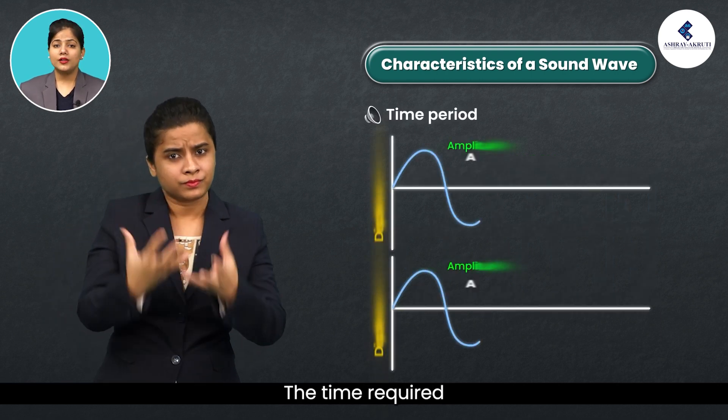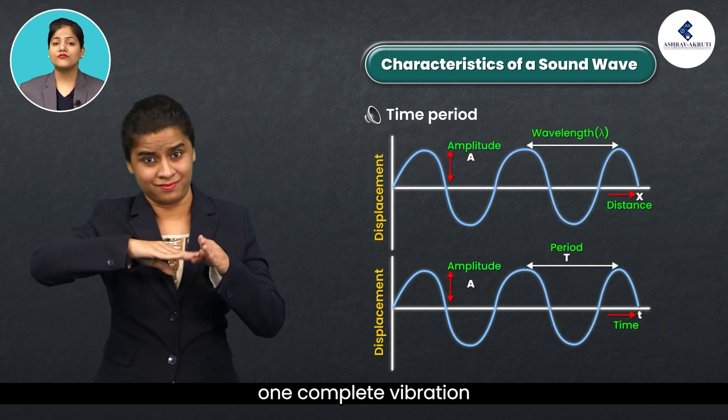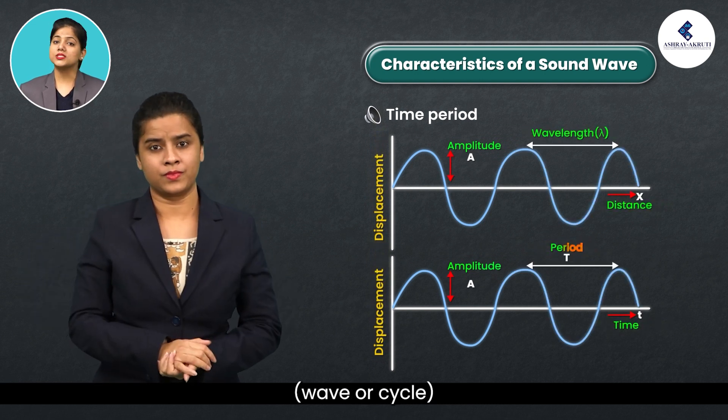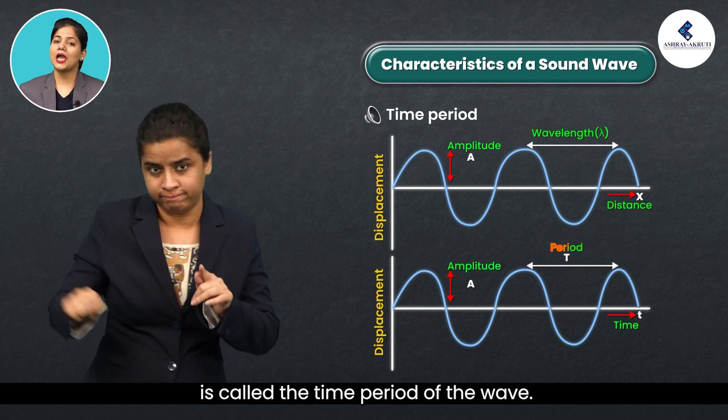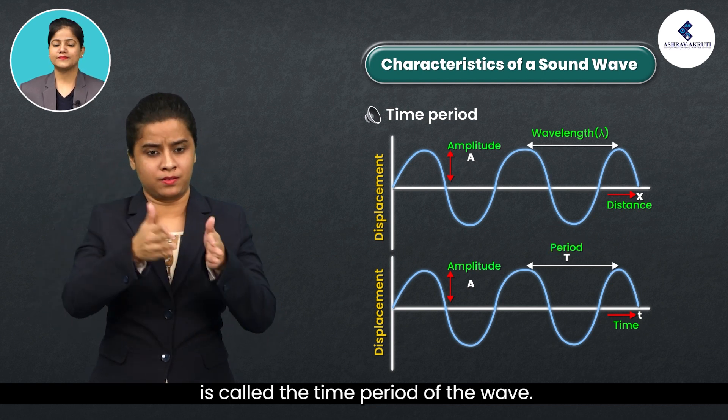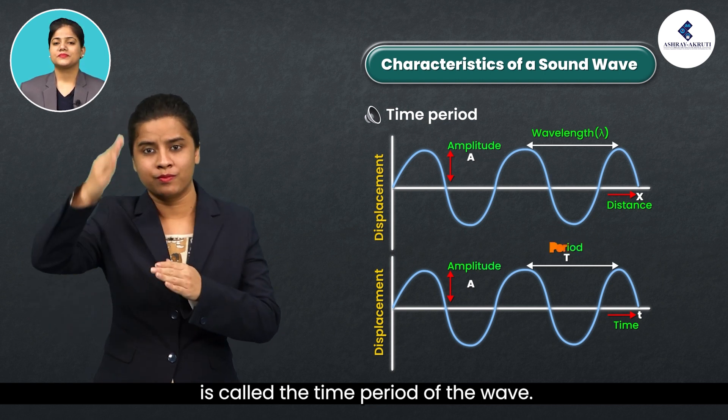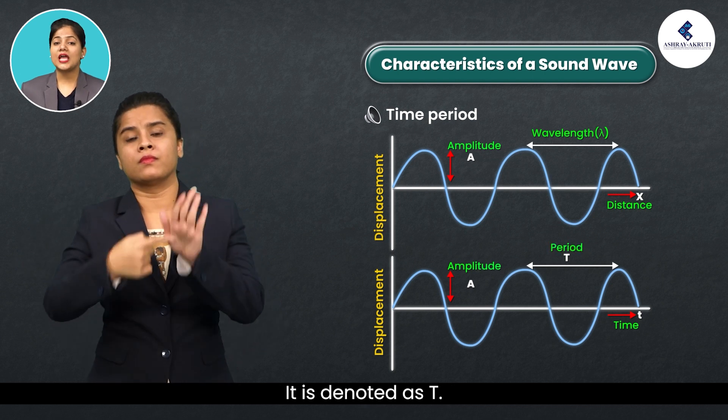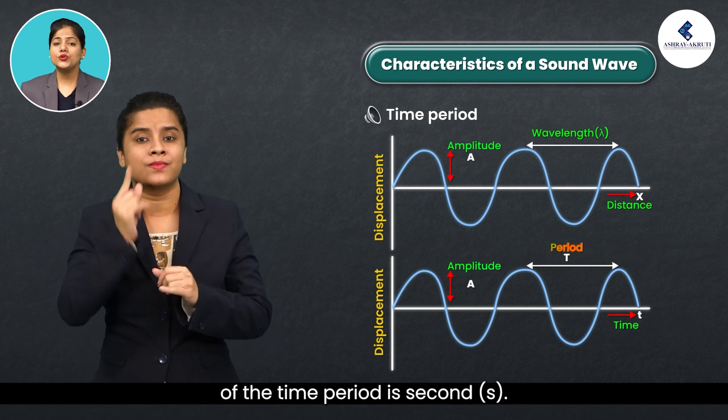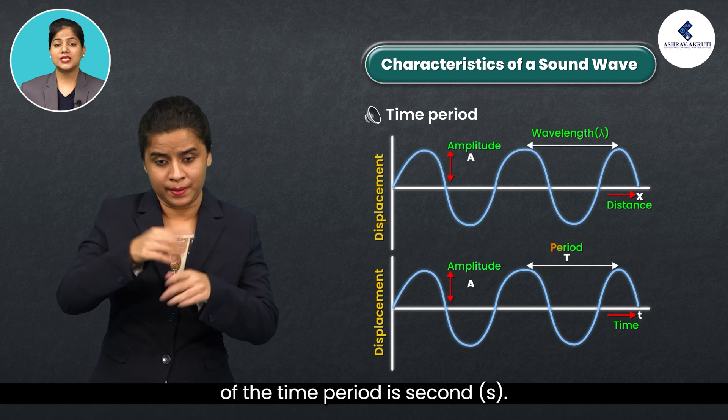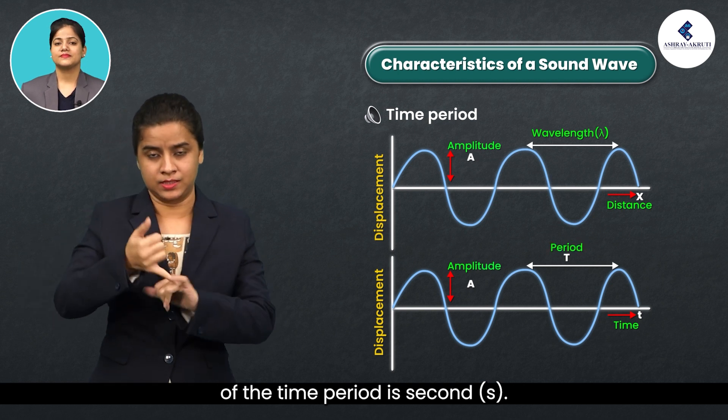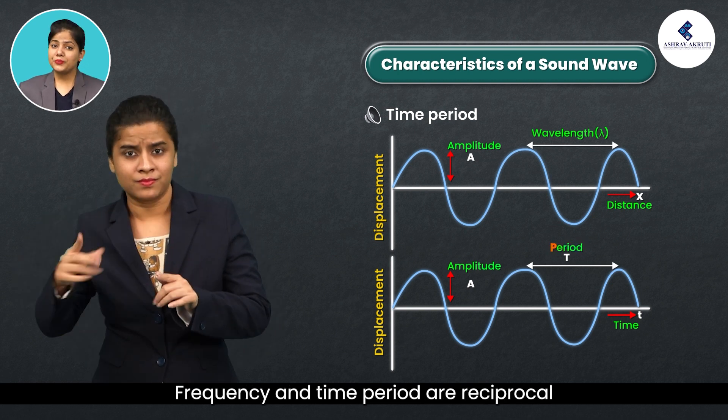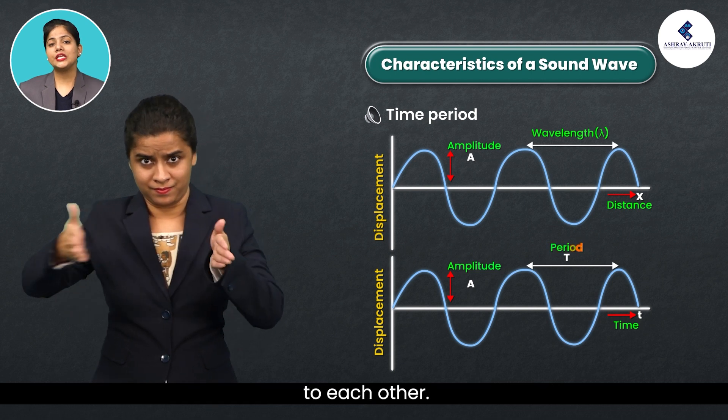The time required to produce one complete vibration, wave or cycle is called the time period of the wave. It is denoted as T. The SI unit of the time period is second (s). Frequency and time period are reciprocal to each other.